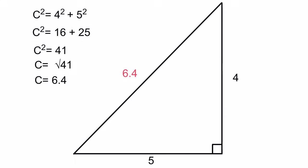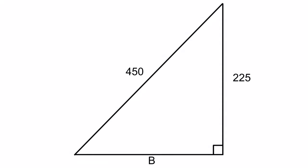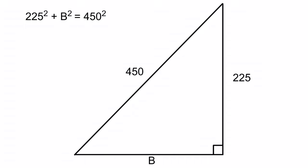Now what do we do if we have the hypotenuse side and one of these sides and need to determine the other side? Let's throw some numbers at it. The hypotenuse is 450 and the a side is 225, and now we want to determine what b is. We plug into the formula what we know: 450 squared is equal to 225 squared plus b squared.